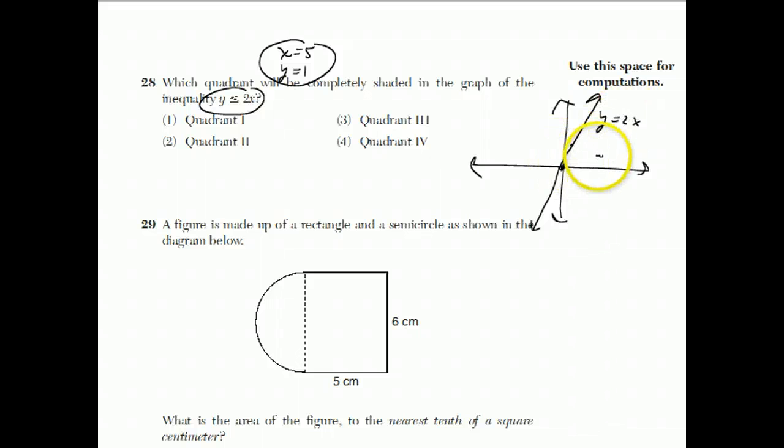Well, 5, 1 is over here somewhere. So what we do is we're going to shade. If we can locate one point that satisfies it, we can shade the entire side of the line that contains that point. And this is quadrant 1. Which quadrant will be completely shaded? Quadrant 1 is not completely shaded. Quadrant 2 is not shaded at all. Quadrant 3 is partially shaded, but it is quadrant 4 that is completely shaded.